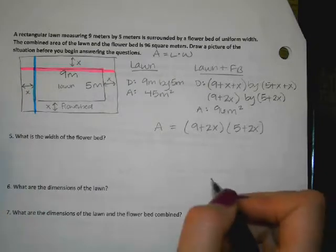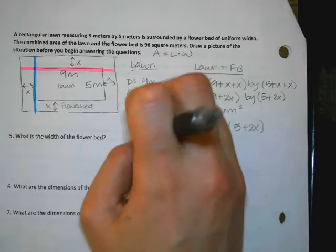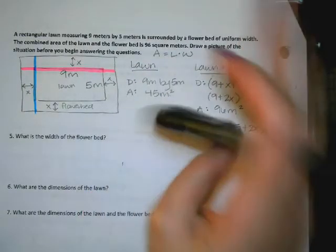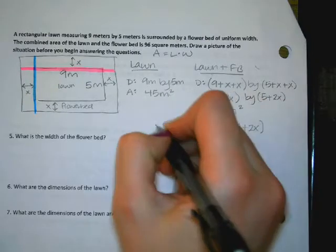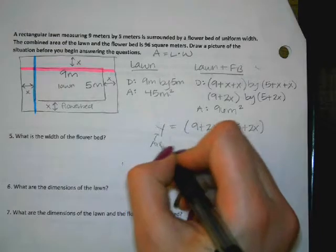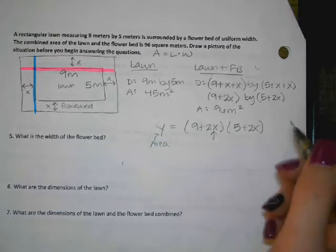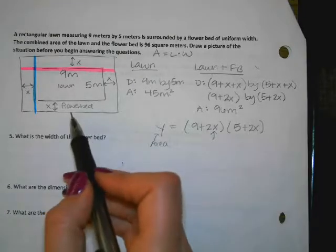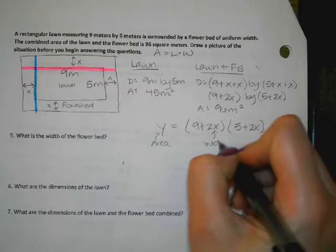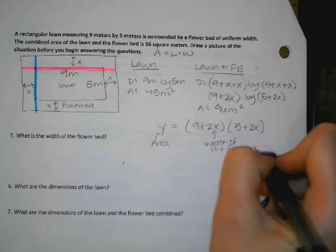So if you guys remember what we did yesterday, we kept, we were always graphing these in our calculators and making our calculator do the work so we didn't have to do the math by hand. So instead of having a equals, we're actually going to have y equals because our calculator uses x's and y's. So this y right here, I just erased an a because the y represents the area. And I don't want to forget what the x represents. So can you guys remind me what x is? Yeah, it's the width of the flower bed.